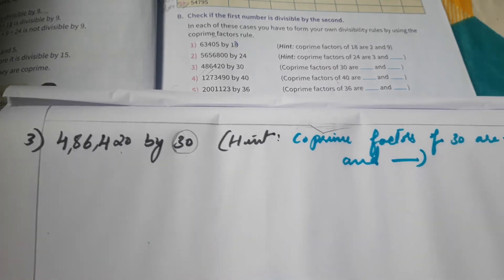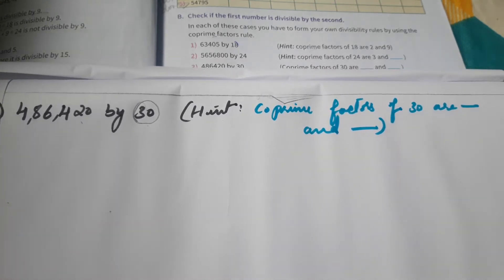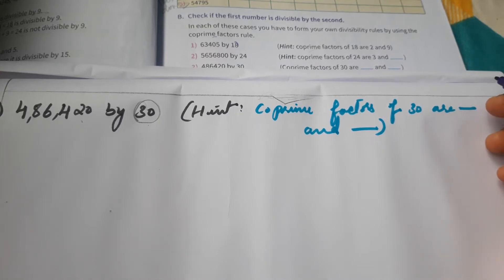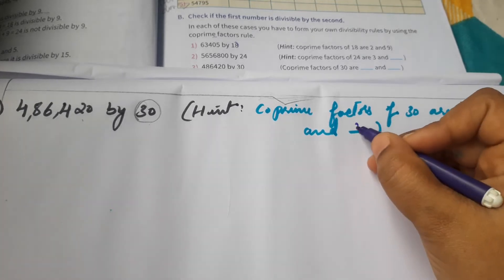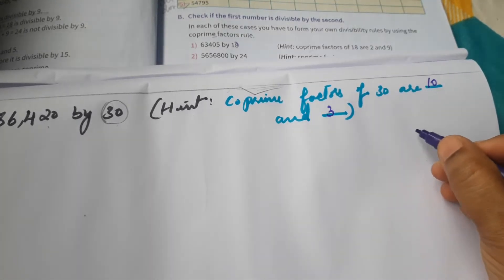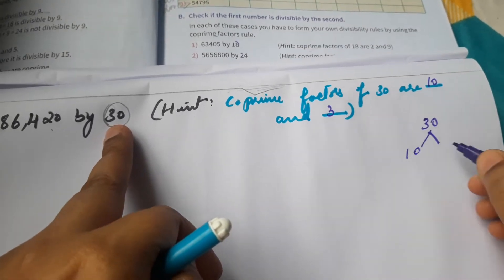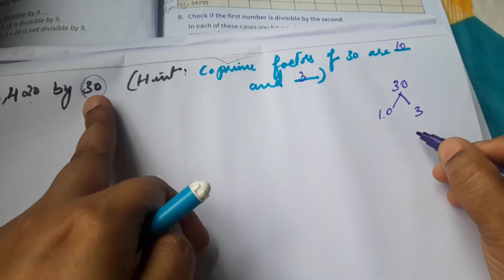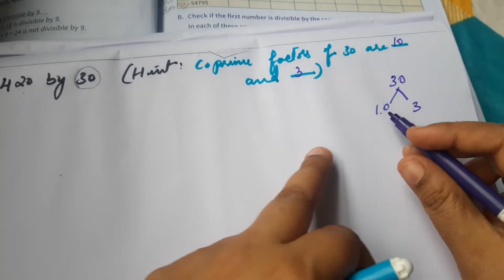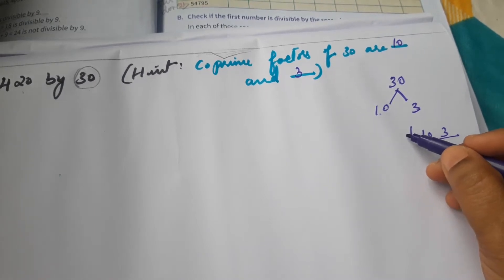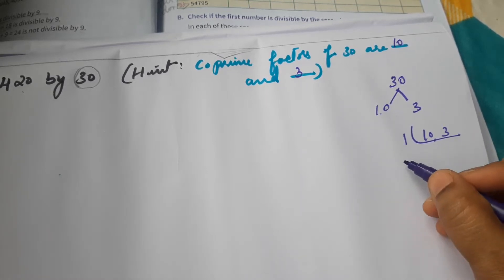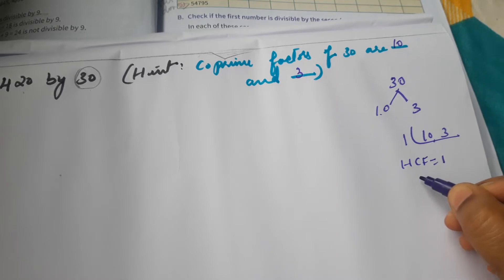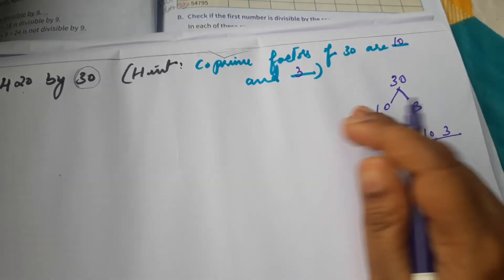The co-prime factor of 30: 10 times 3 is 30. Are 10 and 3 co-prime? Both numbers multiply only with 1 in common — HCF of 10 and 3 is 1. So yes, 10 and 3 are co-prime numbers and are the co-prime factors of 30.